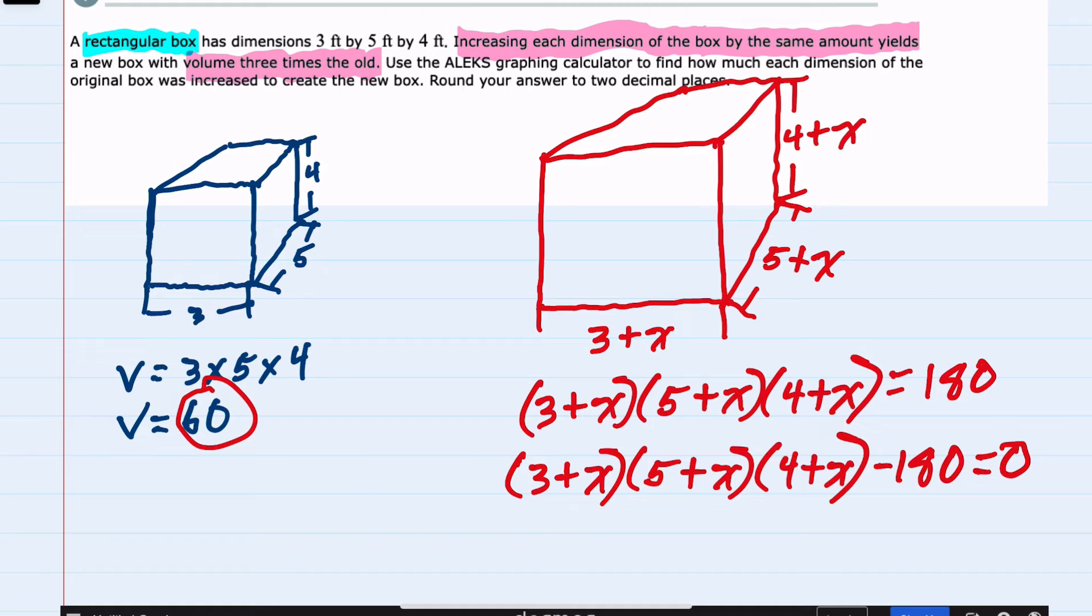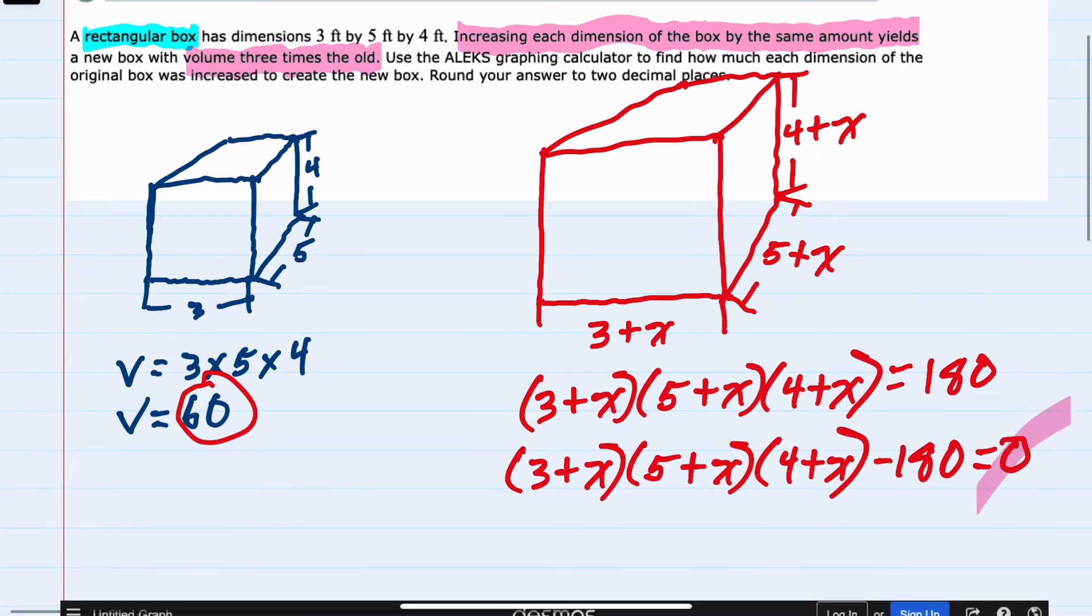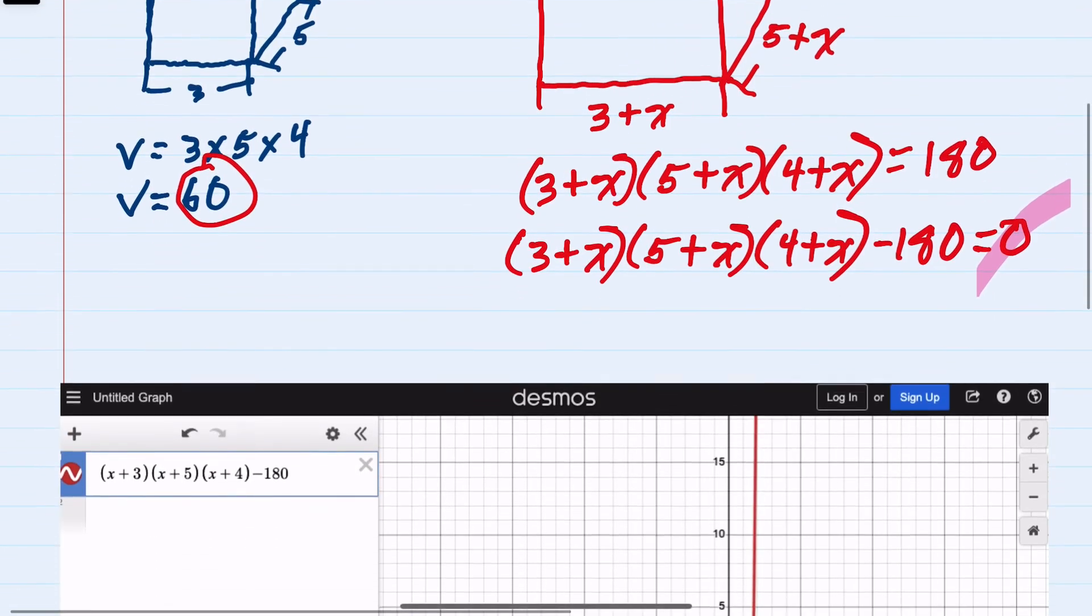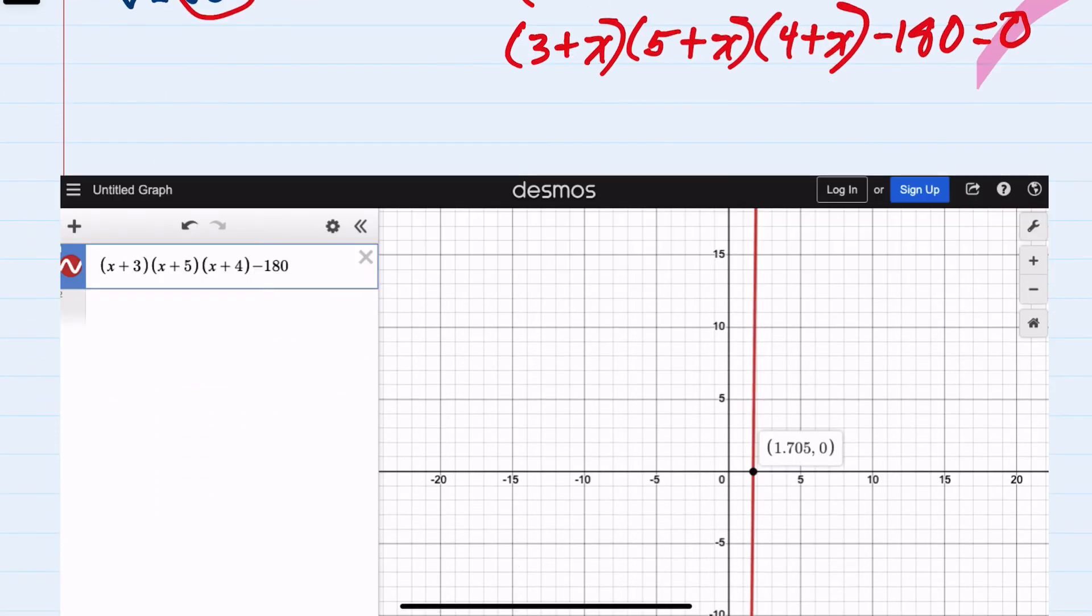I know that this will be some polynomial. Since we're looking for where it equals 0, if I plug this into Desmos, I can see here's my function. Looking at the graph, I can see where it crosses the line y = 0.